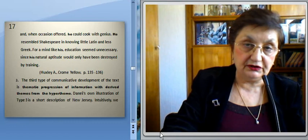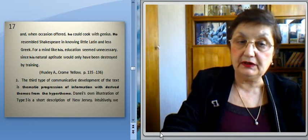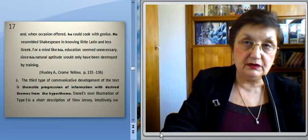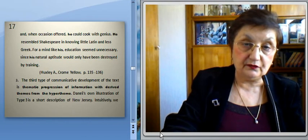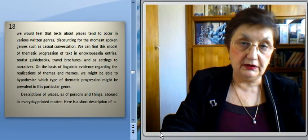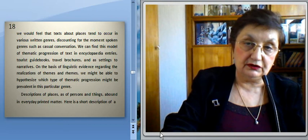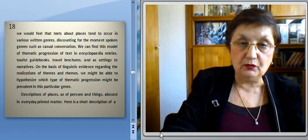The third type of communicative development of the text is semantic progression of information with derived themes from the hyper-theme. Daneš's own illustration of Type 3 is a short description of New Jersey. Intuitively, we would feel that texts about places tend to occur in various written genres — discounting for the moment spoken genres such as casual conversation. We can find this model of semantic progression in encyclopedia entries, tourist guidebooks, travel brochures, and as settings to narratives.